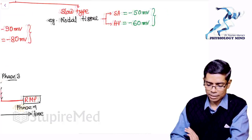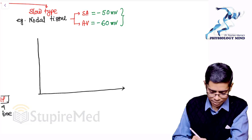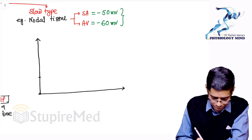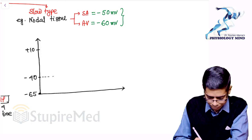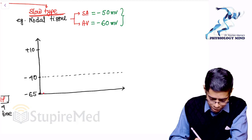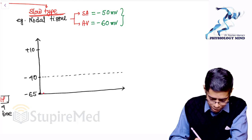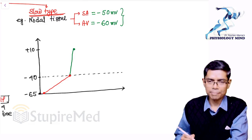Now for the slow-type action potential, we draw the same axes. The membrane voltage values here are minus 65, minus 40, and plus 10 millivolts. In nodal tissue, there is a phase where the membrane voltage moves from minus 65 to minus 40 millivolts, then rises slowly — not rapidly like in myocardium — up to plus 10 millivolts.